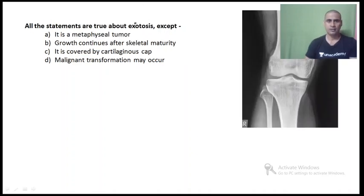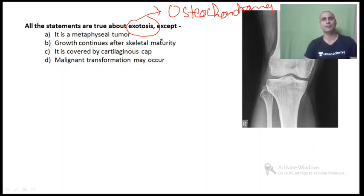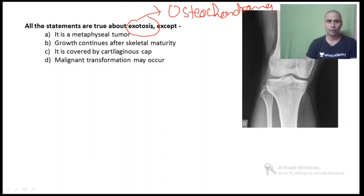So what is exostosis? Exostosis is osteochondroma — the most common benign tumor of bone, but it is usually considered a developmental defect, so it is not considered a true benign tumor. The most common true benign tumor of bone is osteoid osteoma. It is known as exostosis because the growth is exophytic, outside the bone.